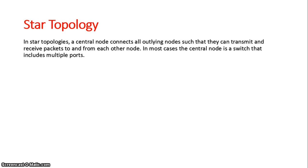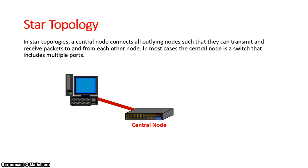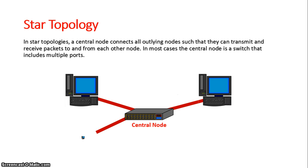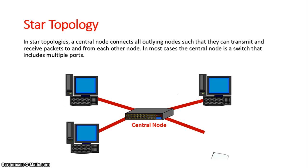The third type of network topology is a star topology. Here, all devices are connected to a central node — in this case, a switch. Every device has a cable plugging into this specific switch. If a device or the cable goes down, the other devices can independently continue to use the network. Only the device that has the malfunction will no longer have access to the network.